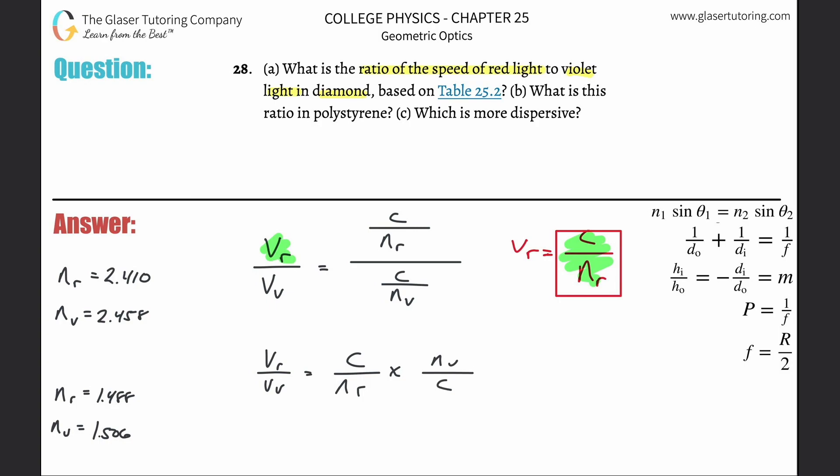Notice what happens to the Cs, they go bye bye. In other words, what we just found was the velocity of red light to the velocity of violet light in diamond is equal to the index of refraction of violet light in diamond divided by the index of refraction of red light in diamond. Interesting result, right?